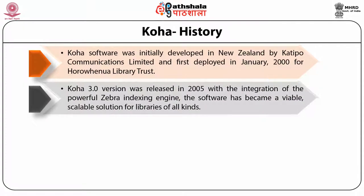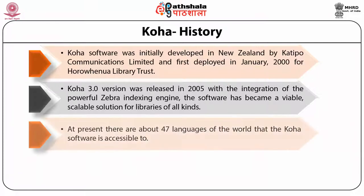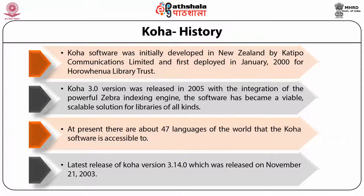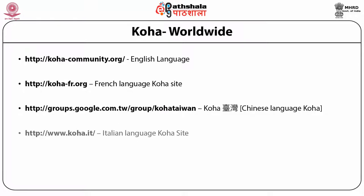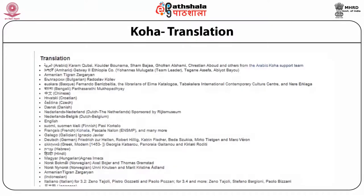With the release of Koha 3.0 in 2005 and the integration of the powerful Zebra indexing engine, the software became a viable, scalable solution for libraries of all kinds. There are about 47 languages of the world that the software is accessible to, and it has been partially translated into 62 languages. The latest release is Koha version 3.14, released on November 21, 2013. The screen shows the major websites of Koha in different languages — English, French, Chinese, Italian, and Spanish.